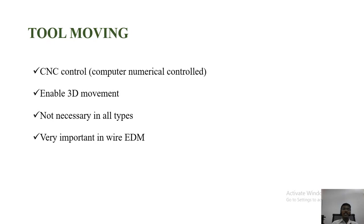Tool moving. Generally the tool path is controlled by CNC. 3D movement is controlled by CNC machines. Not necessary in all types but it is important for wire EDM for accurate machining.